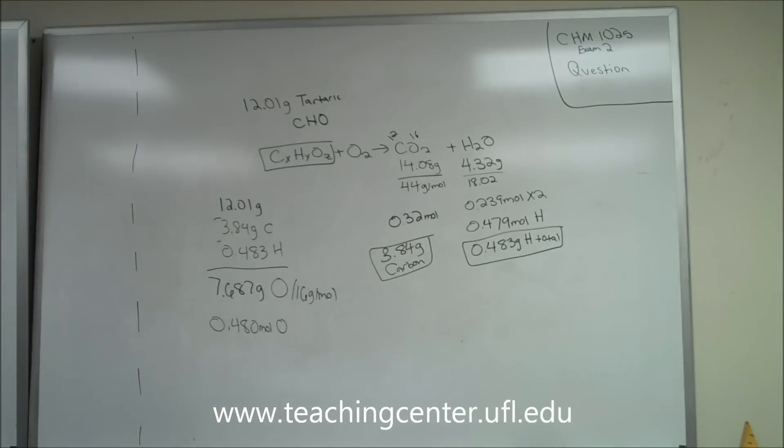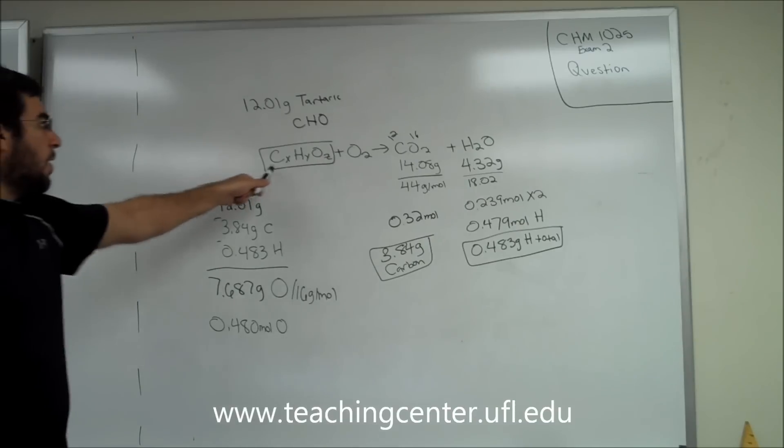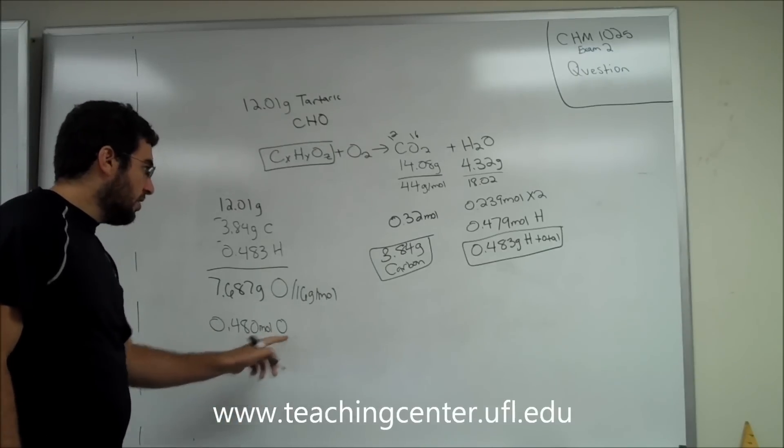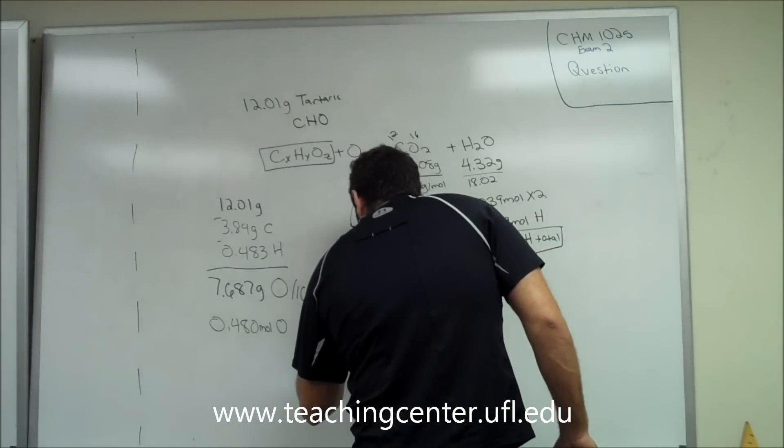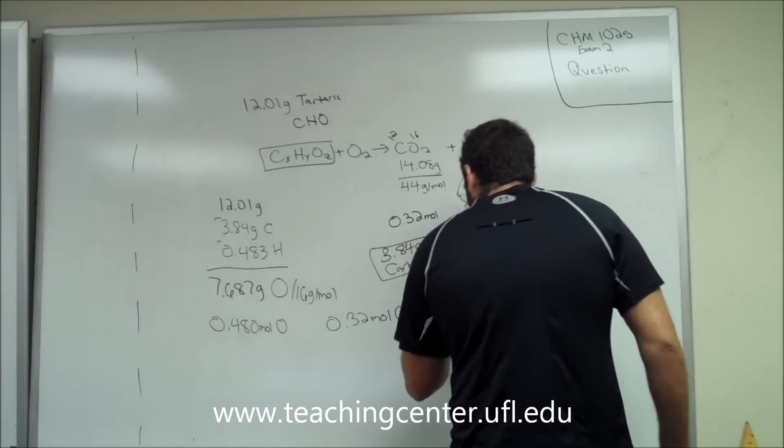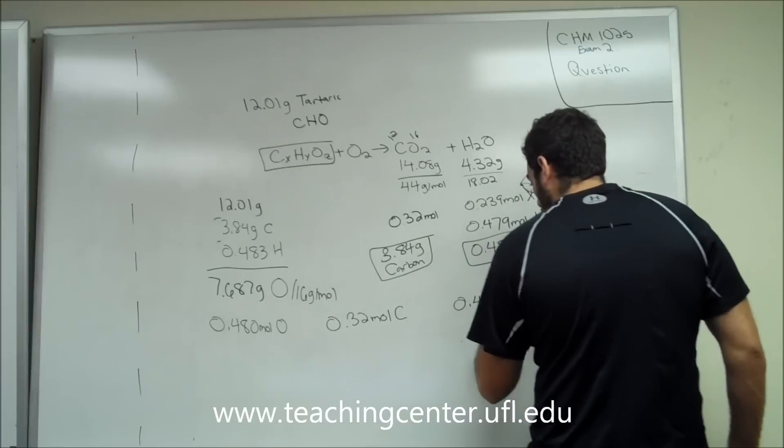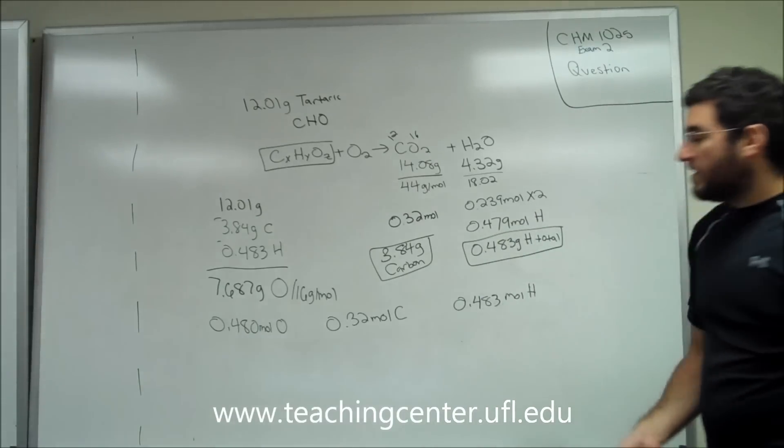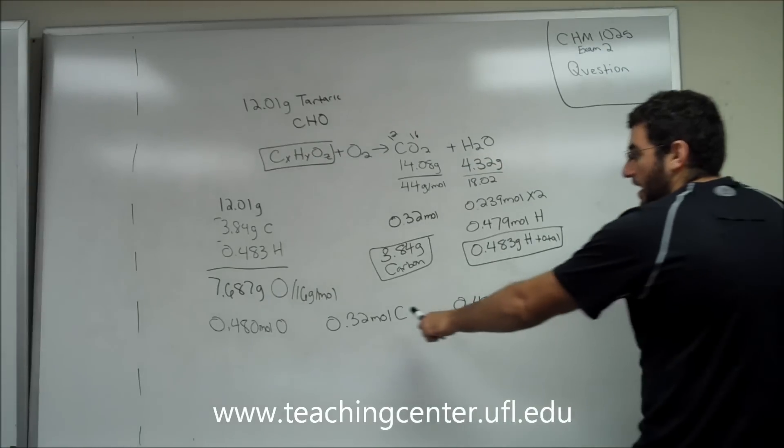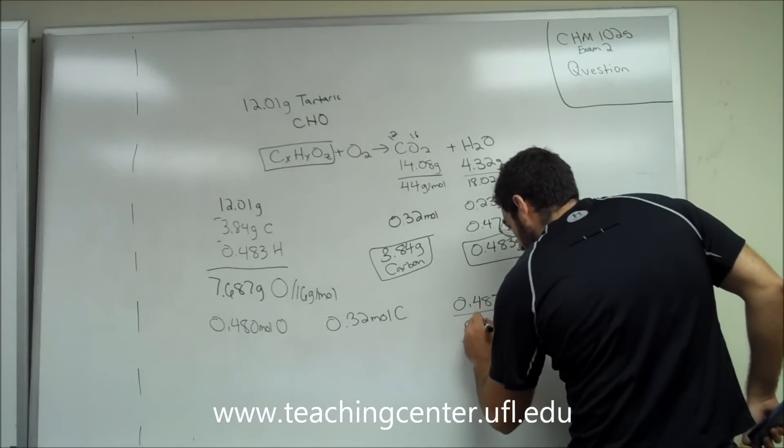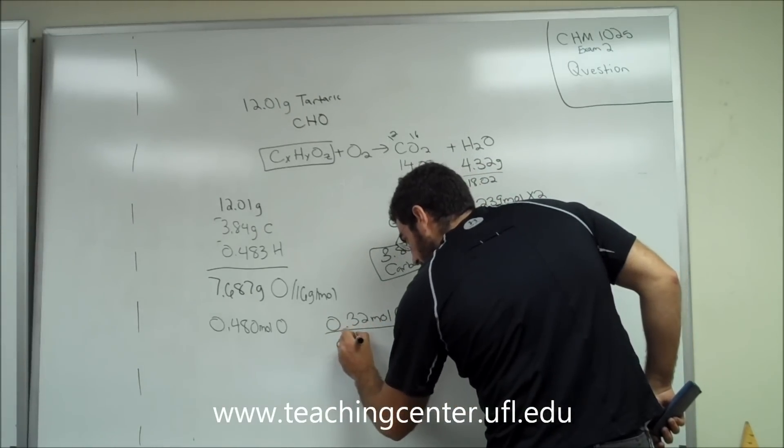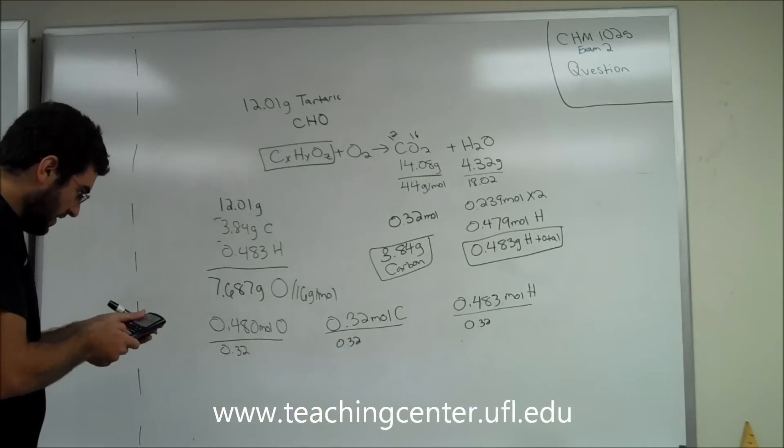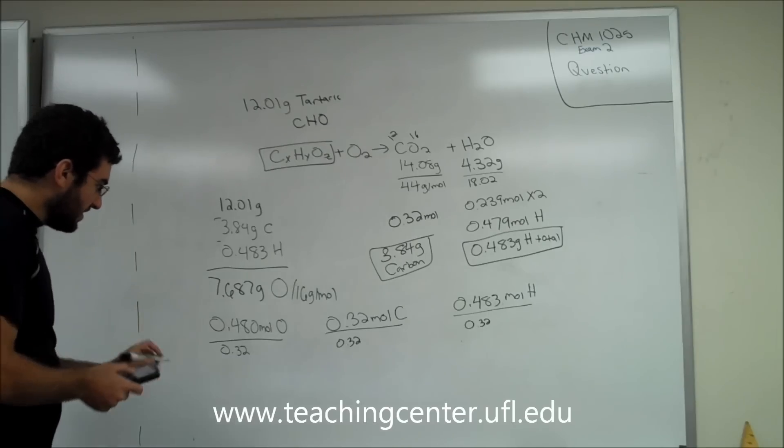So we're almost done. In order to determine what our formula is, we need to divide each of the moles by the lowest. So we know that we have 0.480 moles of oxygen, 0.32 moles of carbon, and 0.483 moles of hydrogen. The easiest way to now find our formula is divide by the smallest, so we're going to divide everything by 0.32. 0.480 divided by 0.32 equals 1.5.